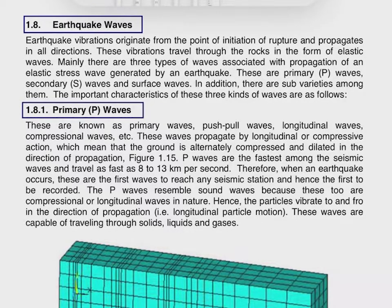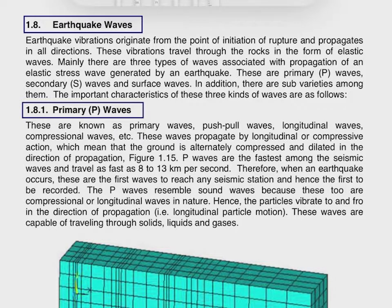Hello and welcome everyone. After understanding elastic rebound theory, we are in a position to explain the origin of earthquake and the reasons that affect the characteristics of an earthquake at a location. Due to rock fractures happening when stresses accumulated reach the ultimate strength of the rock, the accumulated strain energy is released in the form of potential energy through elastic stress waves and heat energy. These elastic stress waves radiate from the fault in all directions.